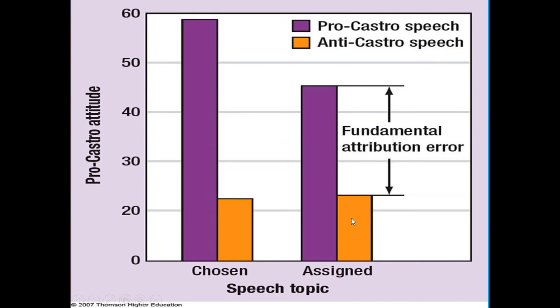So even when we are explicitly told that there was an external or situational factor that determined someone's behavior, still we find that people are committing the fundamental attribution error. They still believe that observing someone's behavior tells them something about who that person is internally. This demonstrates the fundamental nature of this particular bias.